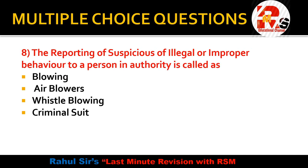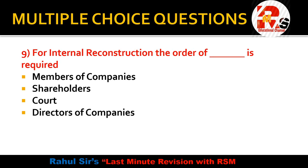Question number 8 — note this carefully, it's a new MCQ. The reporting of suspicious, illegal, or improper behavior to a person in authority is called — blowing air, whistle blowing, or criminal sweat? Reporting suspicious transactions or behavior to higher authorities in the hierarchy is called whistle blowing. So the right answer is whistle blowing.